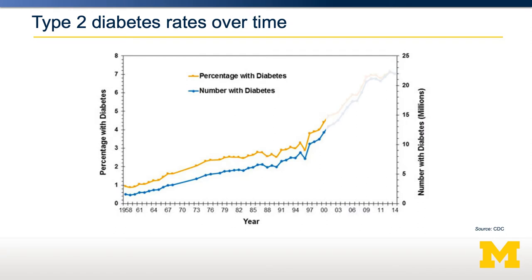If we look at diabetes rates over the last 50 or 60 years, you can see there was a slow but linear increase from about 1960 to about 2000. But as obesity rates have skyrocketed since around the year 2000, diabetes rates have increased in tandem.